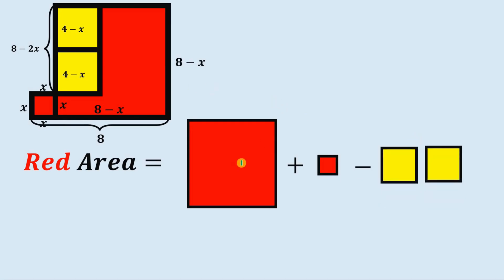Now to find the area of the square, this is just the length of the side raised to the power of 2. So this is just 8 minus x raised to the power of 2, and the area of this small red square is just x squared, and the area of this yellow square is just 2 times 4 minus x raised to the power of 2.